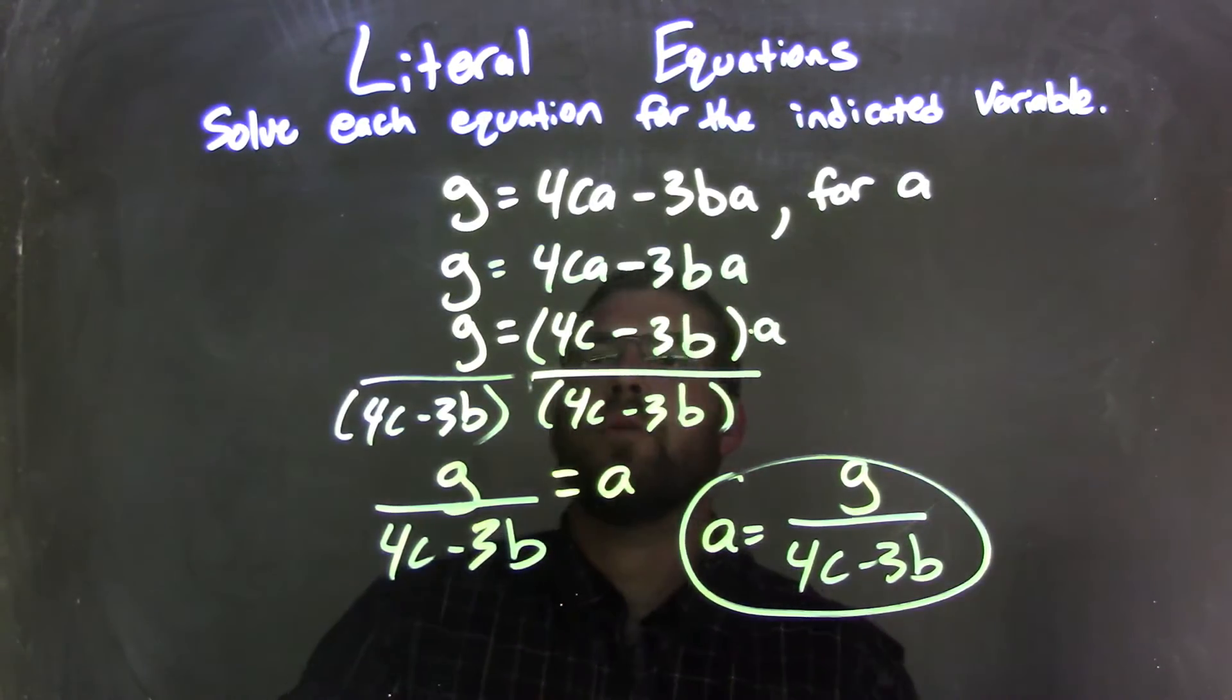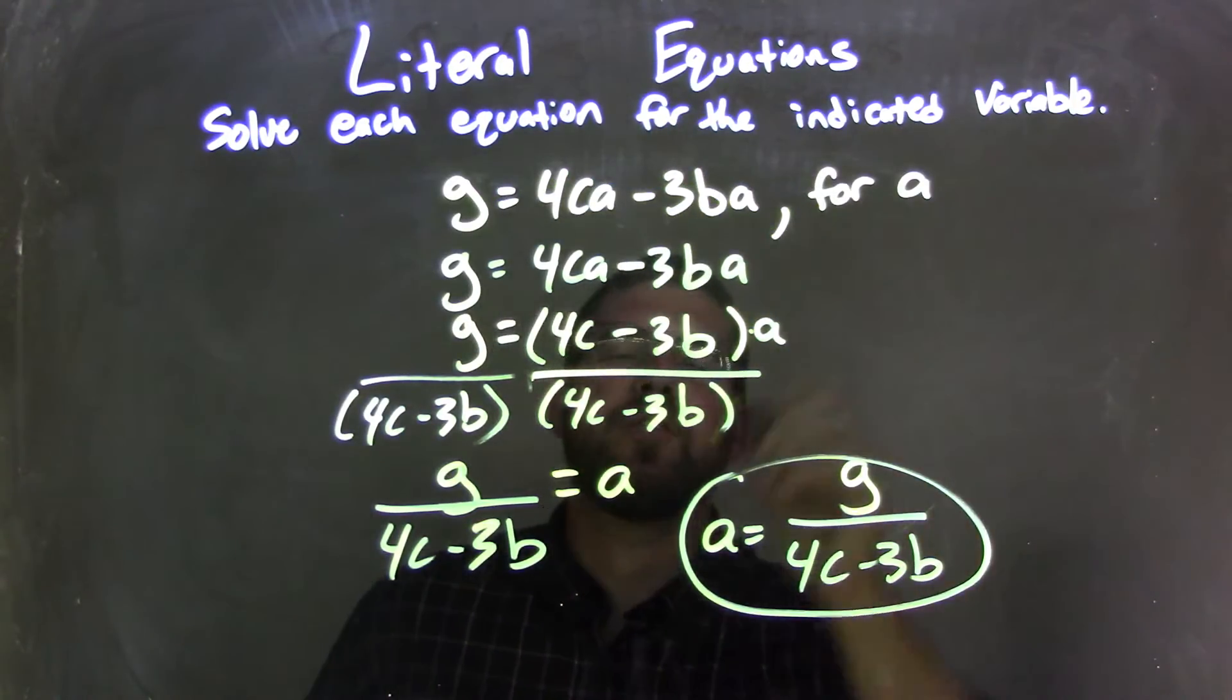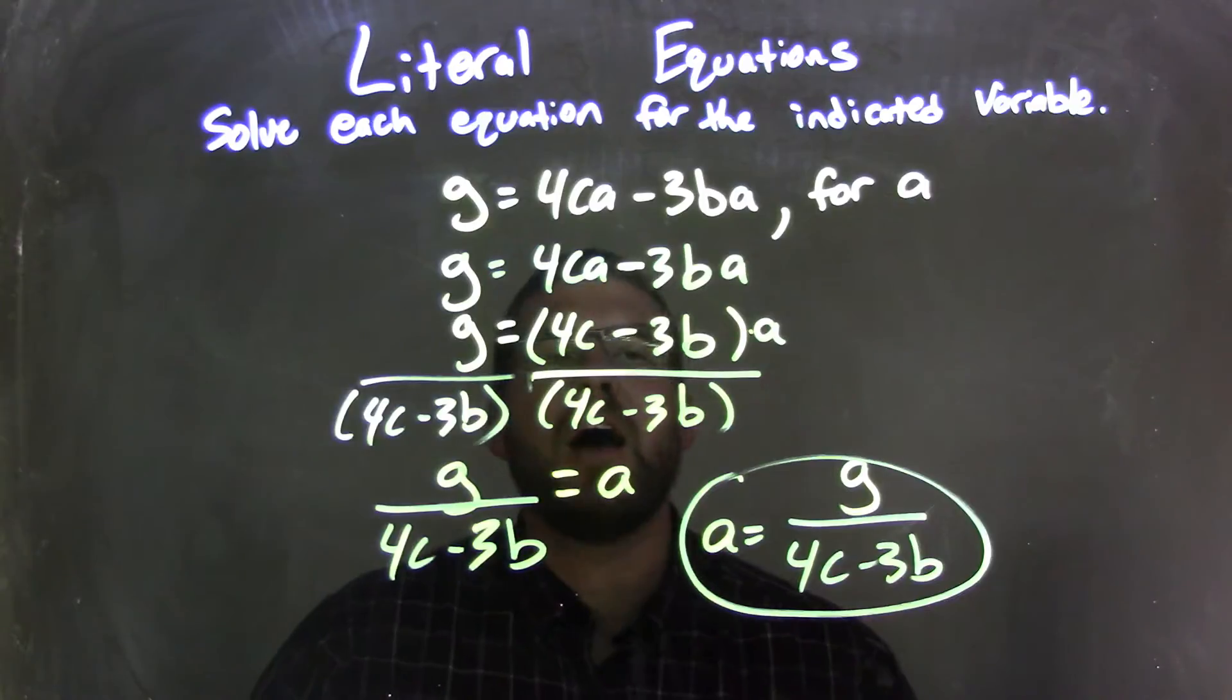So let's recap. We're given the problem G equals 4CA minus 3BA, and we're going to solve that for A. I rewrite my equation,